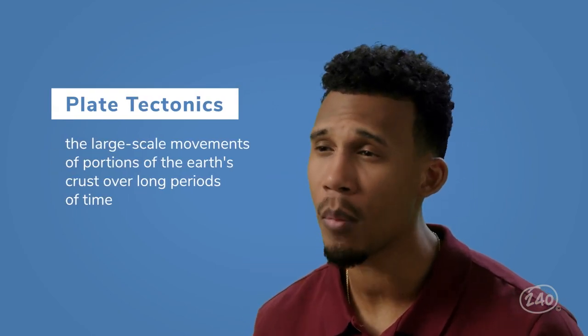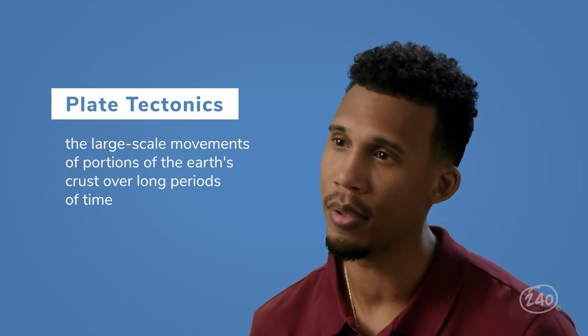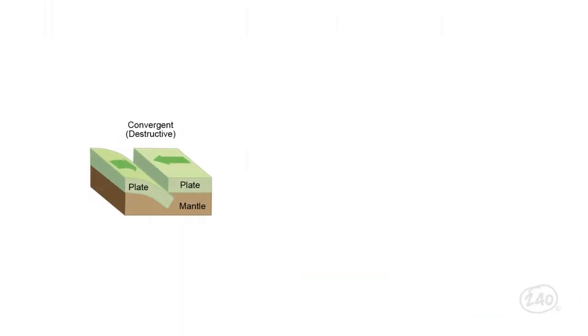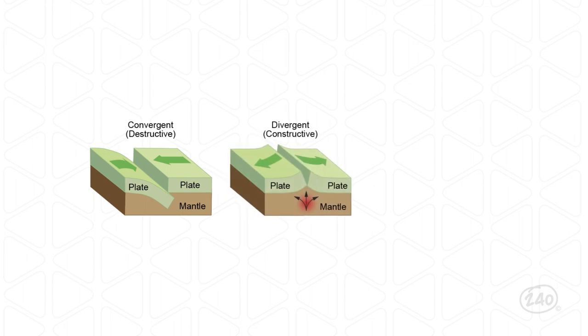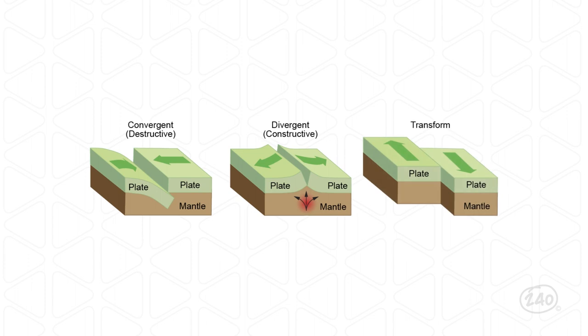Let's talk about plate tectonics and how they change the Earth's surface over time. Plate tectonics is the large-scale movement of portions of the Earth's crust over long periods of time. When two plates meet, that's called a boundary, and there are three kinds. When two plates move towards each other, it's called a convergent boundary — one plate is pushed below the other and becomes part of the mantle, a destructive process. When two plates move away from each other, it's called a divergent boundary — a constructive process where materials from the mantle fill the gap, creating new land. If plates push past each other in opposite directions, it's called a transform boundary.